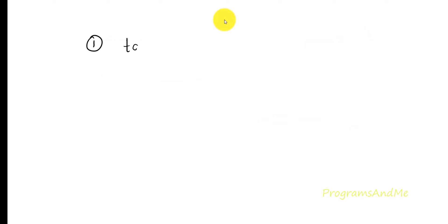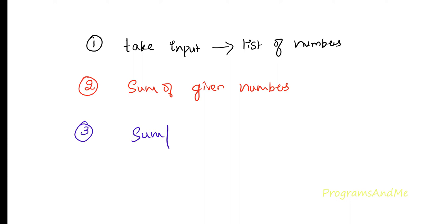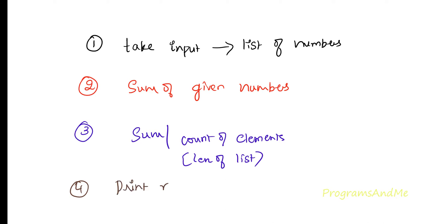Now to write this program, the first step is we need to take the input — in our case that is a list of numbers. The second step is we need to find out the sum of the given numbers. The third step is to divide the sum by how many elements are present in the list, which is the length of the list. The last step is to print the result. We need to follow these 4 steps to write the program.